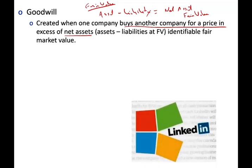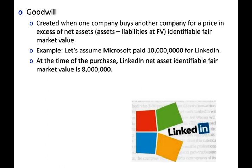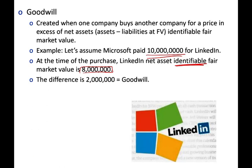For example, Microsoft purchased LinkedIn. Let's assume Microsoft paid $10 million for LinkedIn, and at the time of purchase, LinkedIn's net identifiable asset fair value was $8 million. They looked at all of LinkedIn's assets and liabilities — both on and off the balance sheet — valued everything at fair value, and found the net assets worth $8 million. But they paid $10 million. That extra $2 million could reflect the company's reputation, government relationships, or other unidentifiable factors — whatever they paid extra over that amount is called goodwill.